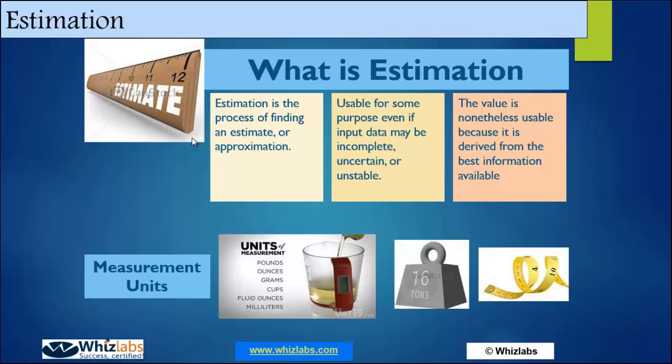Estimation, as a general terminology — whether it is in traditional project management, Agile, rapid application development, or waterfall model — the definition of estimation is the same whichever flavor you pick for executing your project. Estimation is actually a projection about something, and how do we project? We project based on the information which is available at that point in time. So it is actually a probability and an approximation.